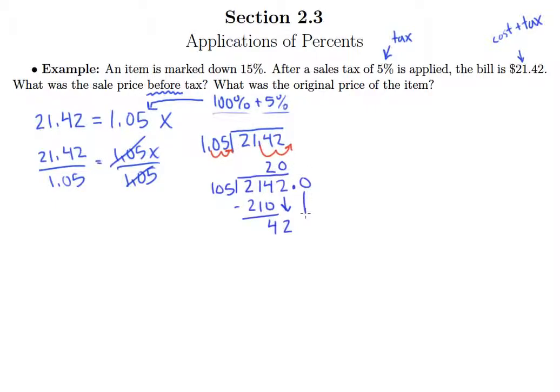Add a decimal point, drop it down. Let's see, 105 goes into 420 exactly 4 times. So now we're finished. So this gives us $20.40. So this is the sale price.